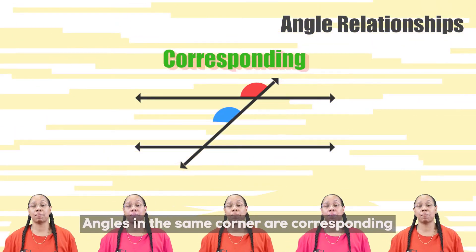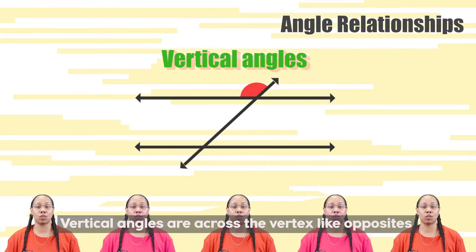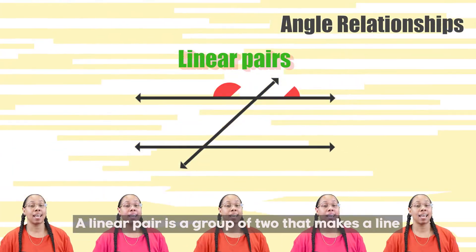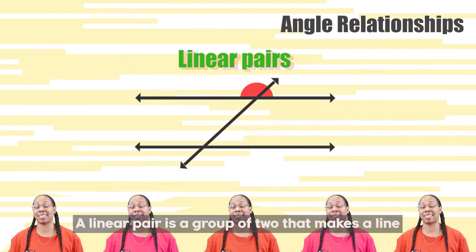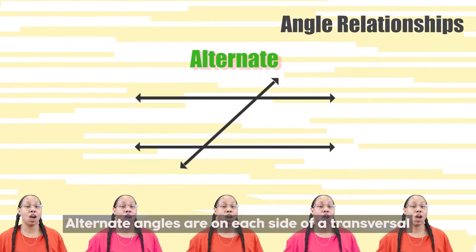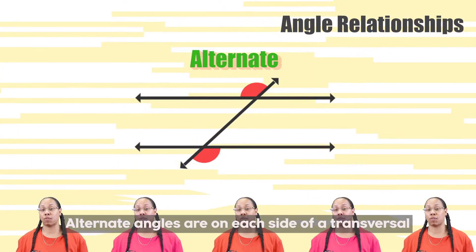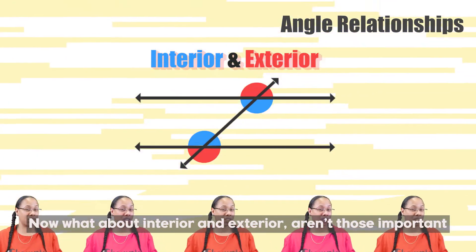Angles in the same corner are corresponding. Vertical angles are across the vertex like opposites. A linear pair is a group of two that makes a line. Consecutive angles along the transversal are on the same side. Alternate angles are on each side of a transversal.